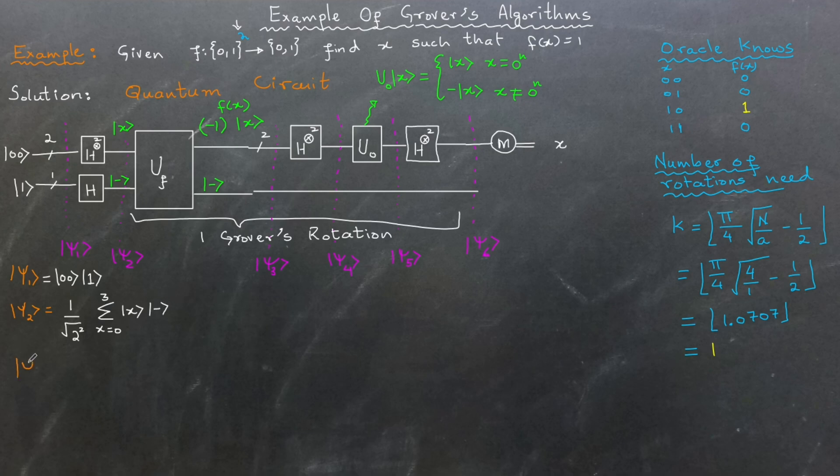In the third stage, |ψ3⟩, we apply the oracle operation which modifies the phase of quantum states based on the function's output. The state corresponding to the value of x for which f(x) equals 1 will have their sign flipped. In our example, this applies to the state associated with x equals 10.